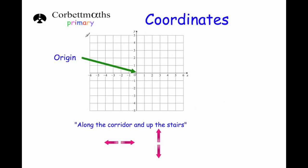Now let's look at coordinates with negative numbers. Here's another set of axes with both an x-axis and a y-axis. The x-axis goes right: 1, 2, 3, 4, 5, and to the left: minus 1, minus 2, minus 3 — a bit like a number line. The y-axis goes up: 1, 2, 3, 4, 5, and down: minus 1, minus 2, minus 3 — like a thermometer. 'Along the corridor' can now be right or left — positive goes right, negative goes left — and 'up the stairs' can be up or down — positive goes up, negative goes down.